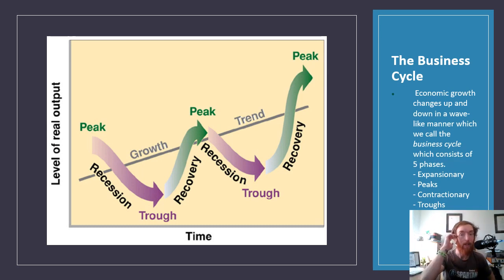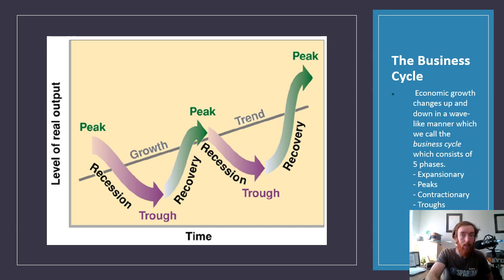When we talk about economic growth, we talk about the business cycle, which basically measures economic activity over time. The two axes are the level of real output — which is GDP essentially — and time. As you can see, over time the level of output is growing and going up, but it's not constantly going up — we're just hoping that on average it's going up.